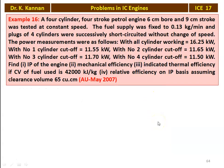We take example number 16 from the May 2007 question paper. A 4-cylinder 4-stroke petrol engine, 6 centimeter bore and 9 centimeter stroke, was tested at constant speed. The fuel supply was fixed to 0.13 kilograms per minute and the plugs of the 4 cylinders were successively short-circuited without change in speed. The power measurements: with all cylinders working 16.25 kilowatts; cylinder 1 cutoff 11.55 kilowatts; cylinder 2 cutoff 11.65 kilowatts; cylinder 3 cutoff 11.7 kilowatts; cylinder 4 cutoff 11.5 kilowatts. Find the indicated power of the engine, mechanical efficiency, indicated thermal efficiency. Calorific value of the fuel is 42,000 kilojoules per kilogram. Find relative efficiency on indicated power basis, assuming clearance volume is 65 cubic centimeter.